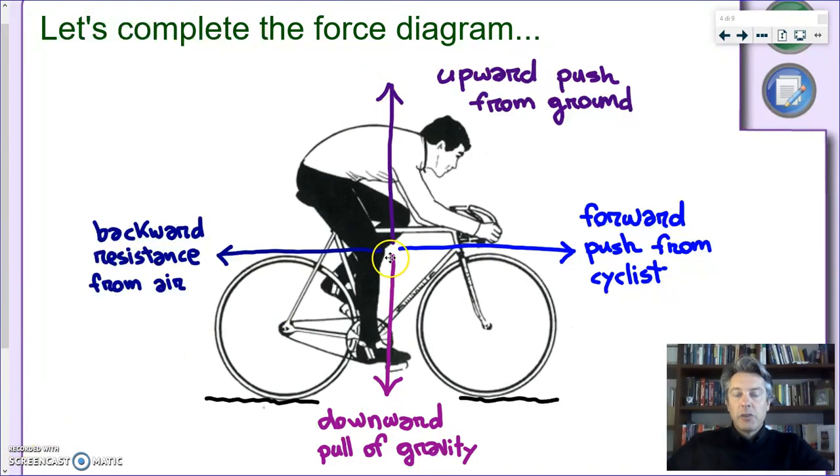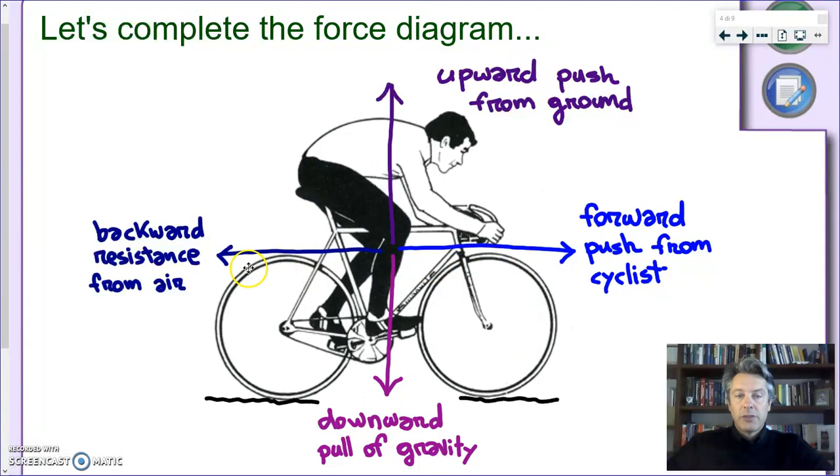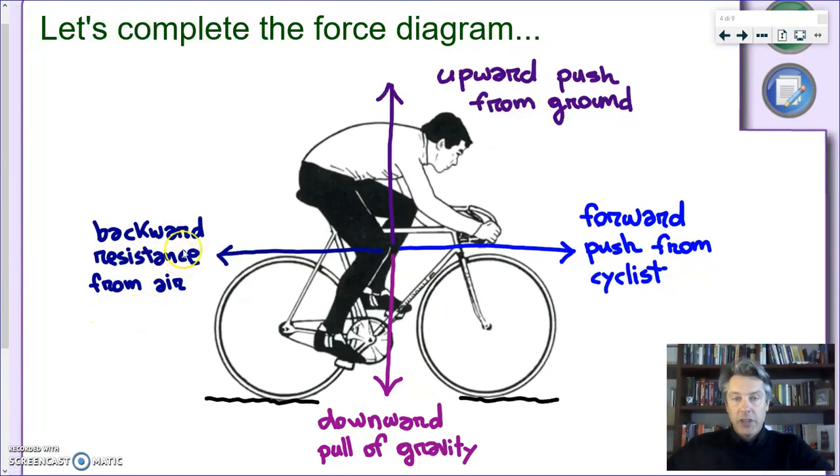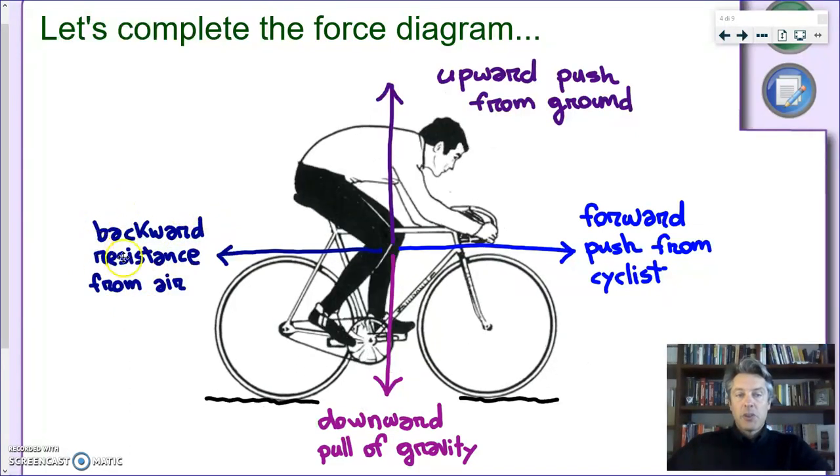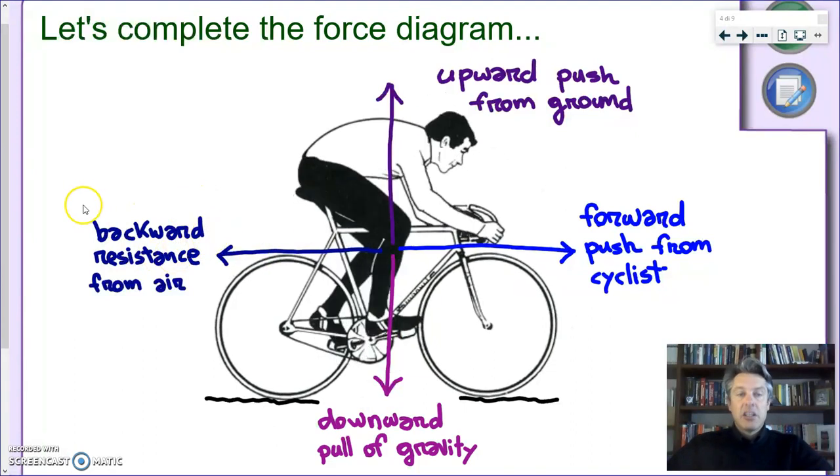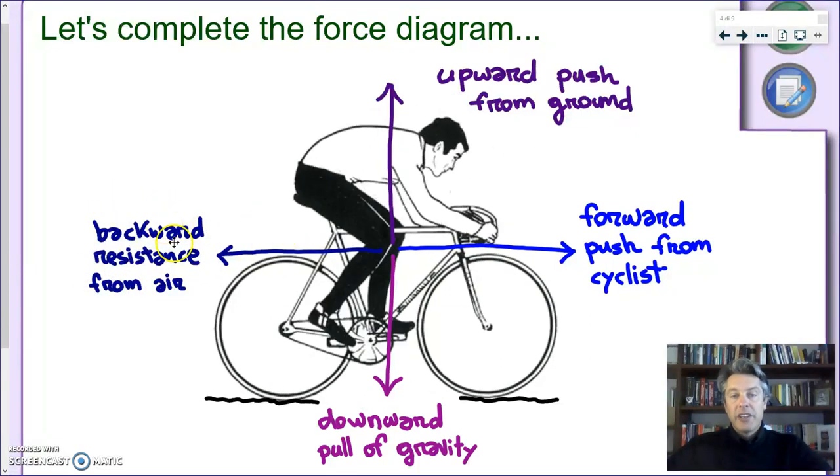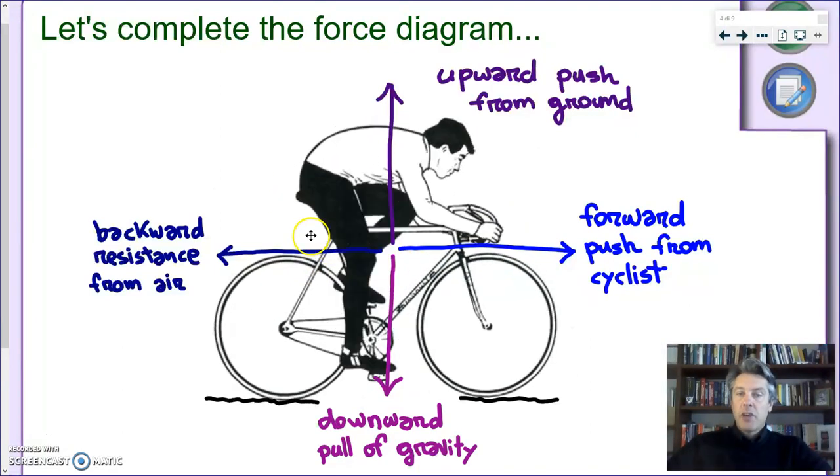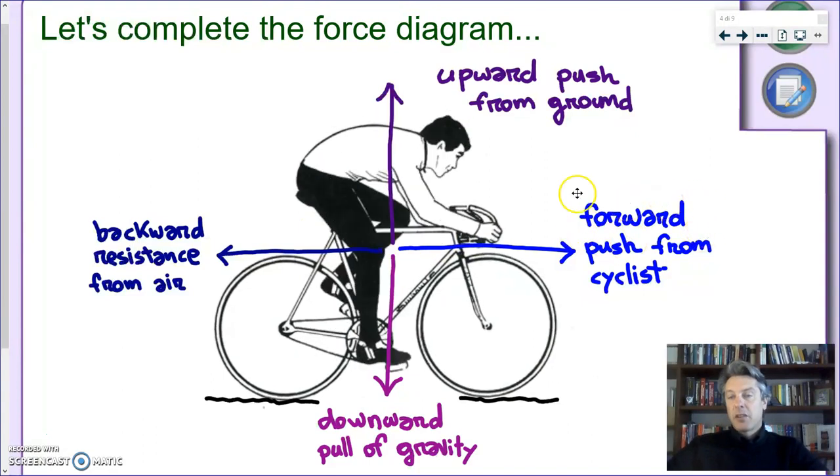So let's look at the other two forces, the horizontal ones. Now this one we have air resistance, also known as air drag or air friction. This is a force which is always pointing backwards, is always opposing the motion of an object. Every time you move there is some form of air resistance. And finally, we have the forward push of a cyclist pedaling all the time. He's trying to push his bicycle forward.